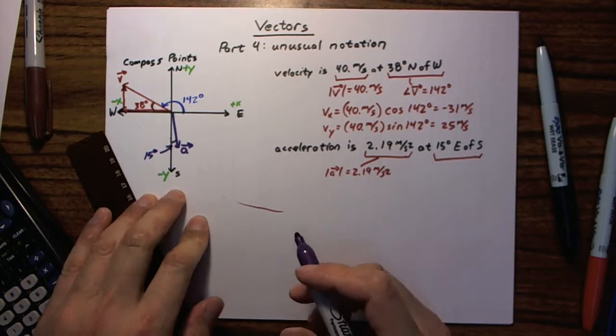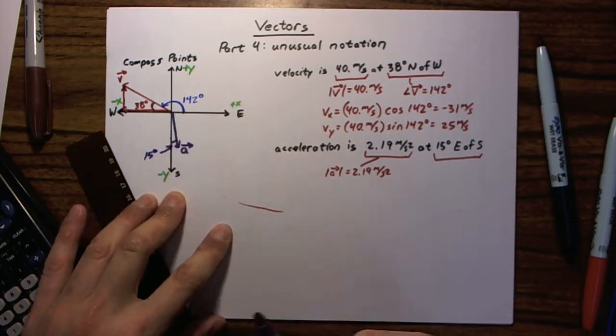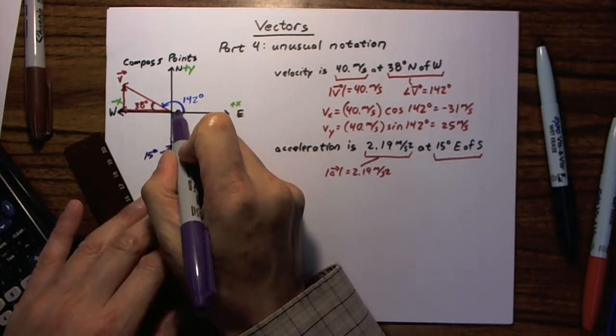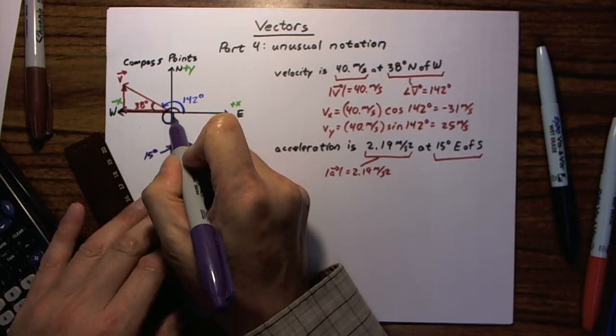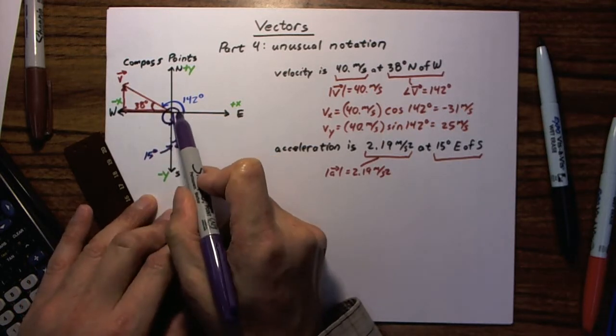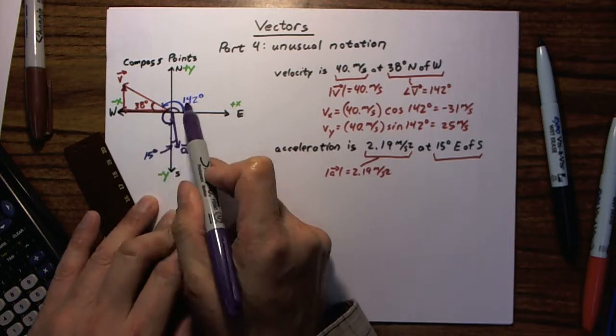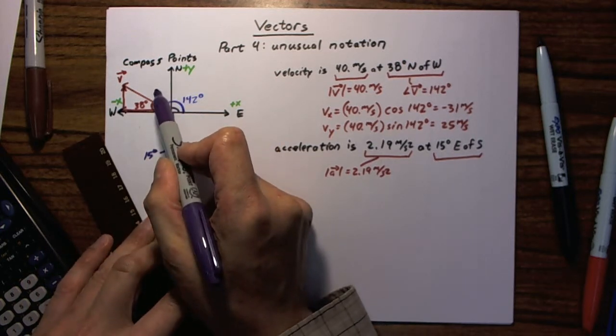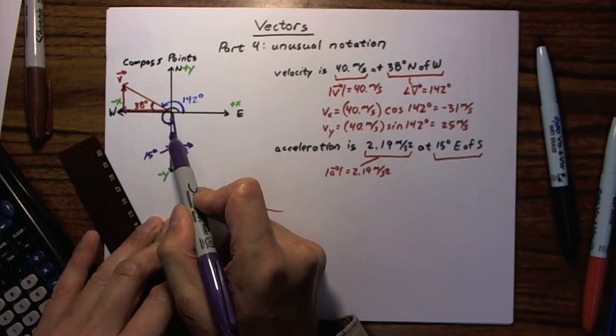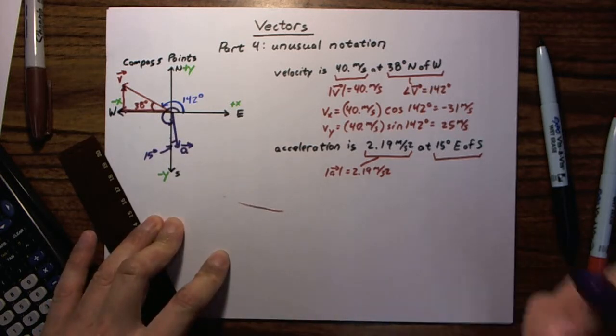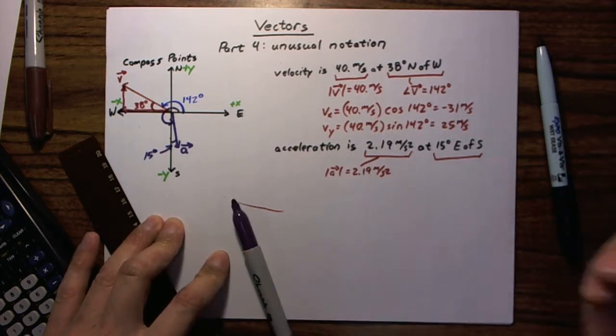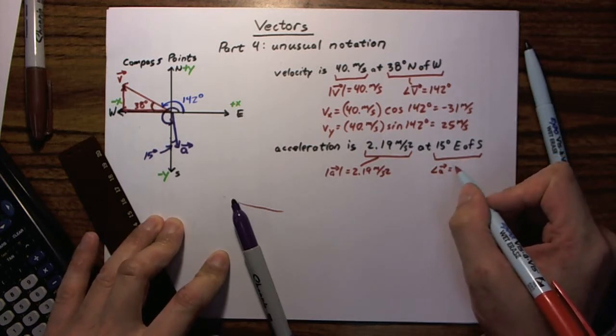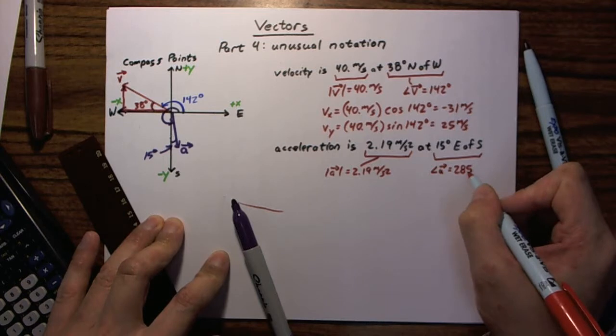Okay, so if we want to find the true direction, we can do one of two things. We can take the usual approach of starting at the plus x-axis and rotating all the way around until we hit the acceleration vector. And that's going to be through three 90-degree angles, in other words, 270 degrees, plus another 15 degrees. So, 90 degrees there, 90 degrees there, 90 degrees there, and another 15 right there. Okay, so one way to answer this would be to say that the direction of A is 270 plus 15, which is 285 degrees.